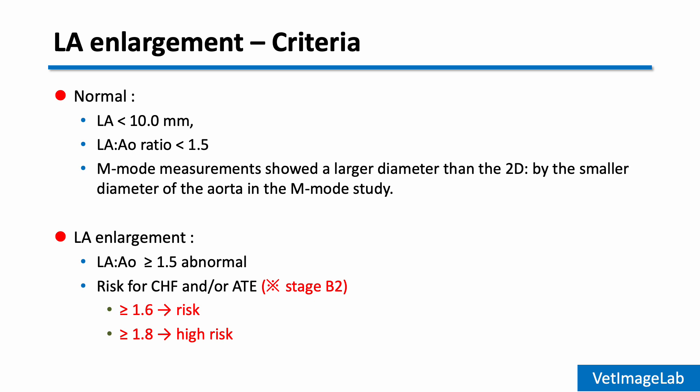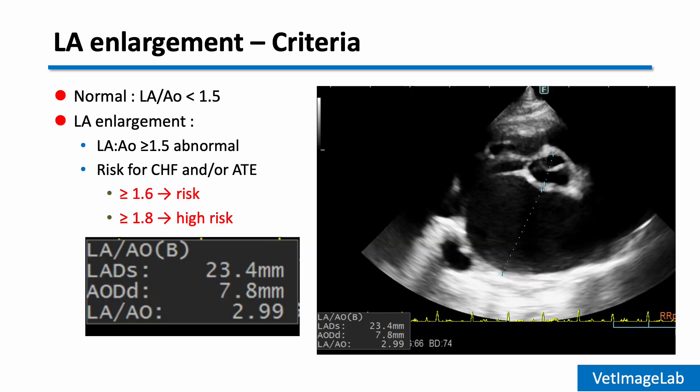Once the LA to AO ratio exceeds 1.6, the risk of congestive heart failure or arterial thromboembolism starts to increase. If the ratio reaches 1.8 or higher, the risk becomes even higher. Here's an example of a cat with significant left atrial enlargement — the LA to AO ratio is 2.99, clearly indicating severe left atrial enlargement with a very high risk of congestive heart failure and arterial thromboembolism.